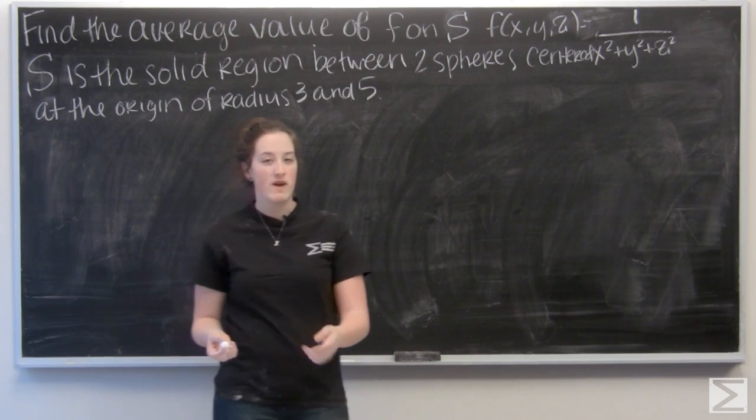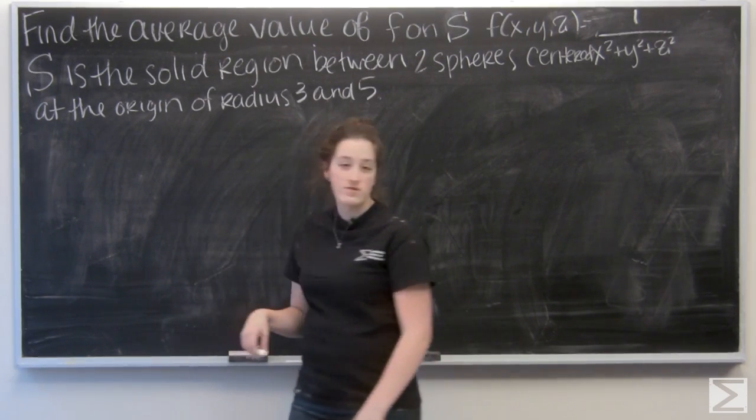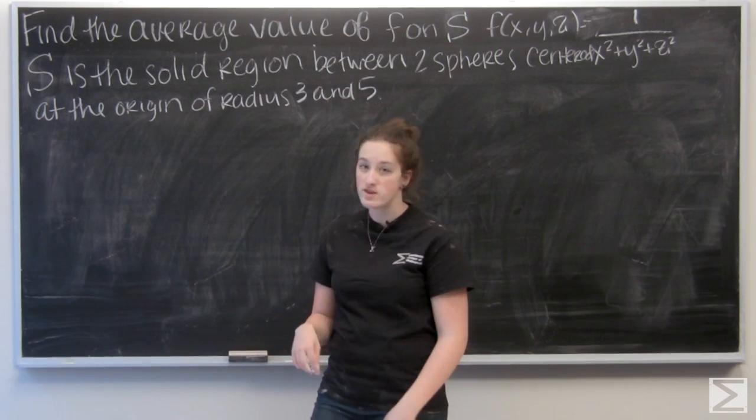So the first step to finding average value is defining the volume of our region. Here I have two spheres, so I'm going to find the volume of the larger sphere and then subtract the volume of the smaller sphere.